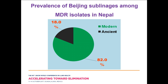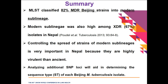In summary, multi-locus sequence typing classified 82% of MDR Beijing strains into the modern sublineage. In our previous published study, among XDR isolates, the modern sublineage was also prevalent. Controlling the spread of the modern sublineage is very important because various studies from different countries report that it is more virulent and has very high transmission potential. Analyzing additional loci can help further classify the modern lineage into different subtypes.